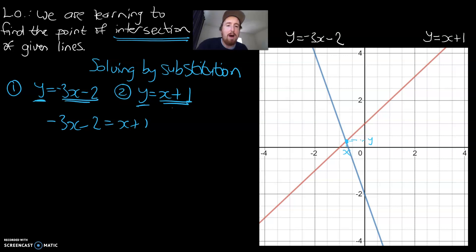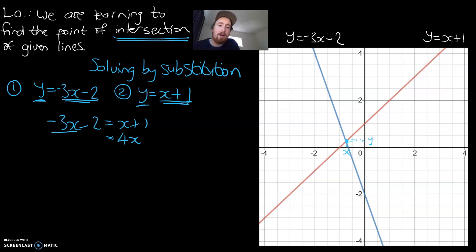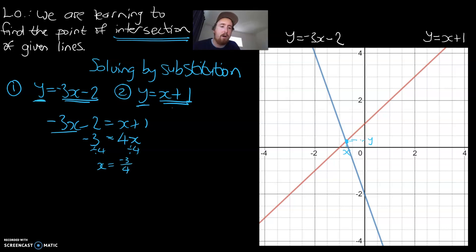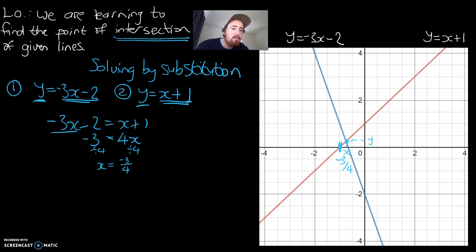Because both of those are equal to y, both are going to be equal to each other, and we can find what the x value is. First step: move negative 3x to the other side — it becomes positive 3x, so that gives us 4x. That positive 1 becomes negative 1 on the other side, giving negative 3. Dividing both sides by four, x is going to be negative three over four. That point looks slightly less than one, so our value looks pretty accurate.